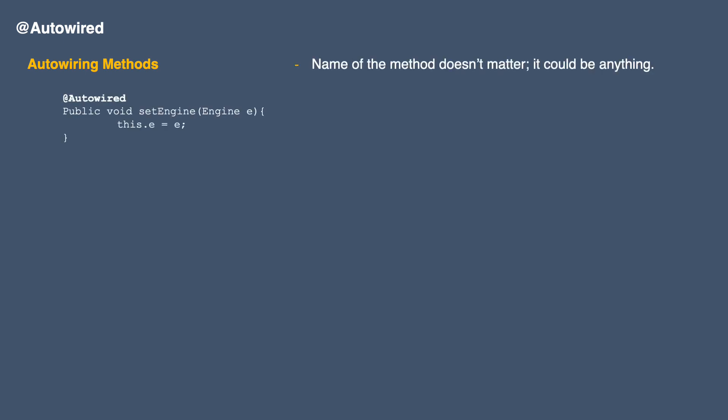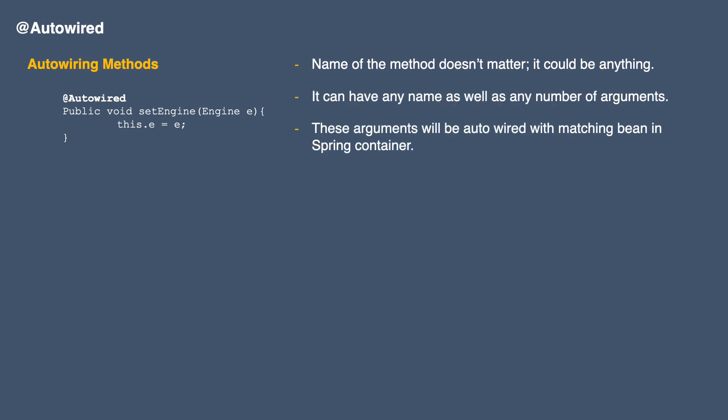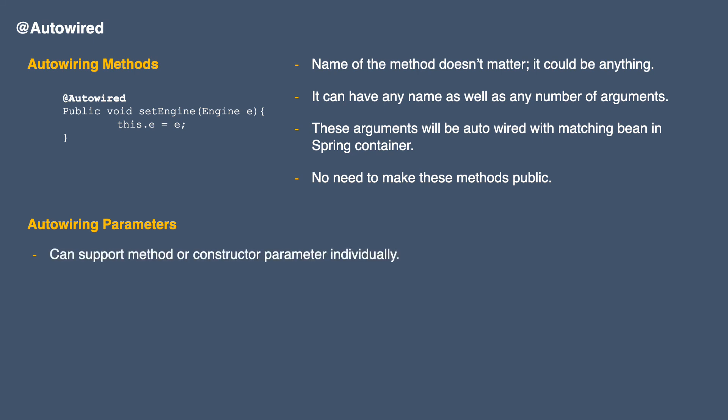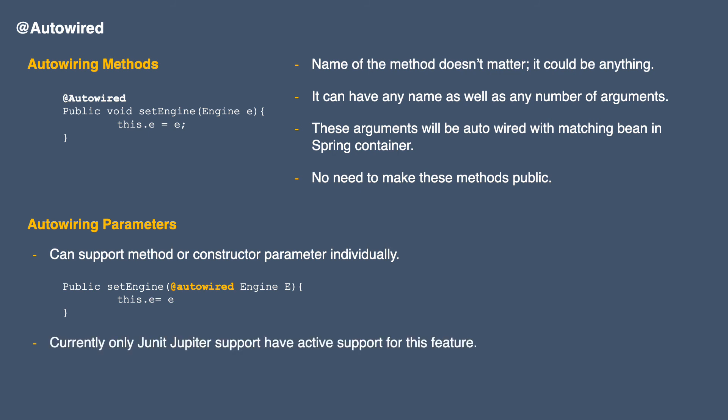Moving ahead, we have autowiring methods — this approach looks something like this. The name of the method doesn't matter; it can have any name as well as any number of arguments, and those arguments will be autowired with matching beans in the Spring container. Again, we don't need to make the method public. Next, we have autowiring parameters — for this kind of autowiring we can support method or constructor parameters individually. Currently, only JUnit Jupiter has active support for this feature, so we don't need to worry too much about it.